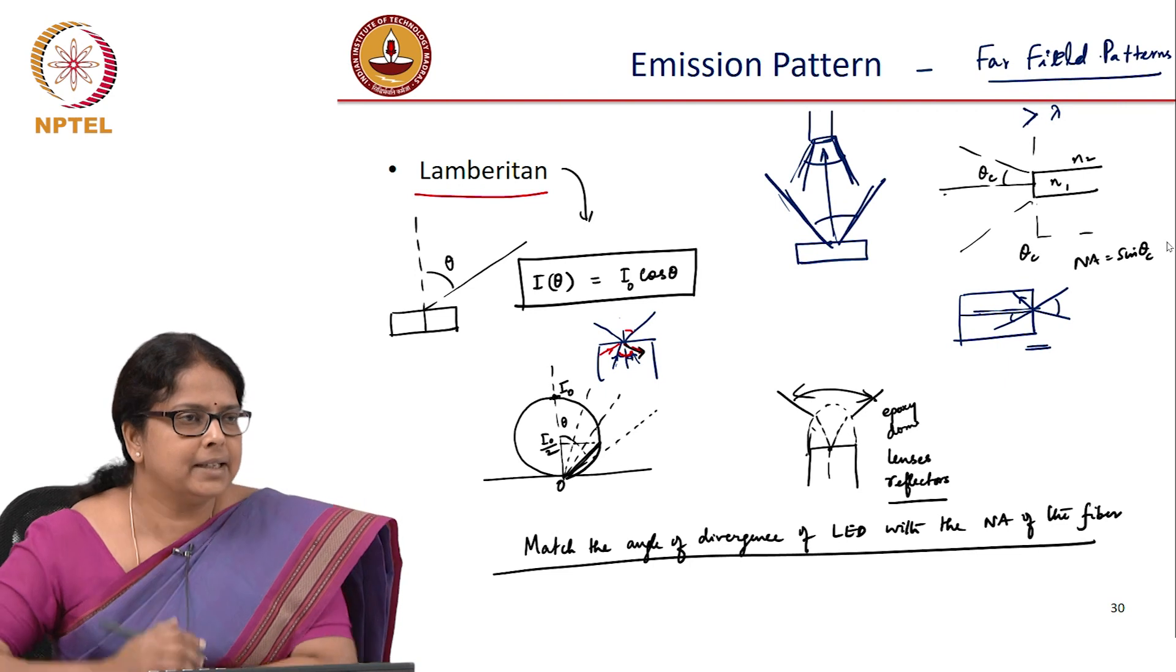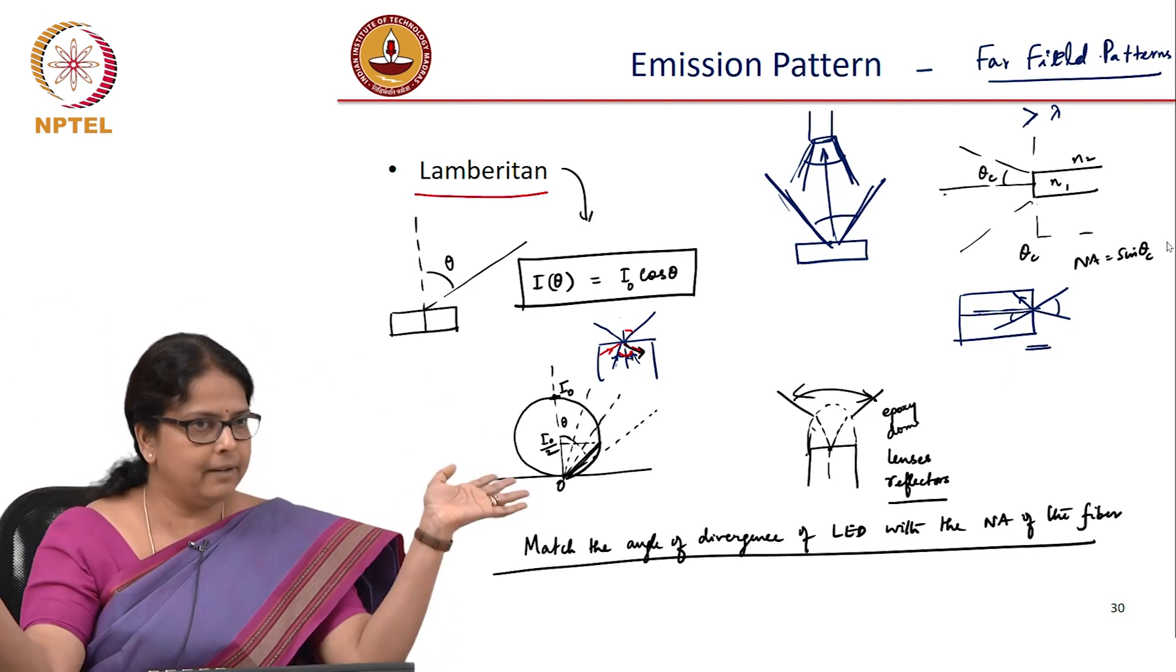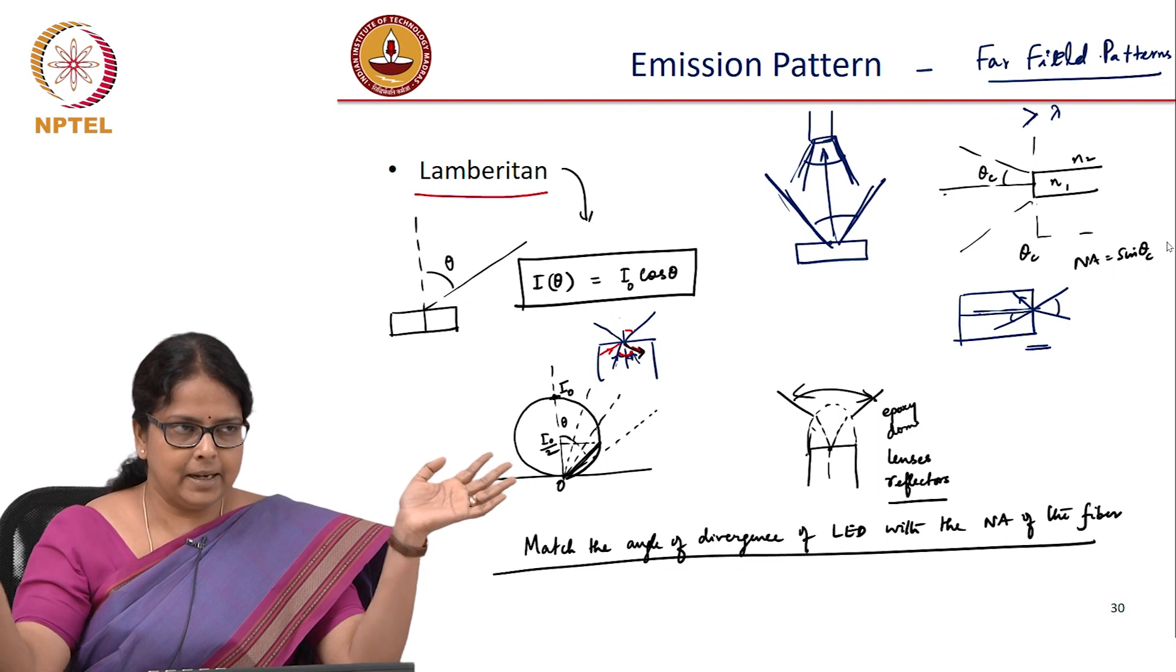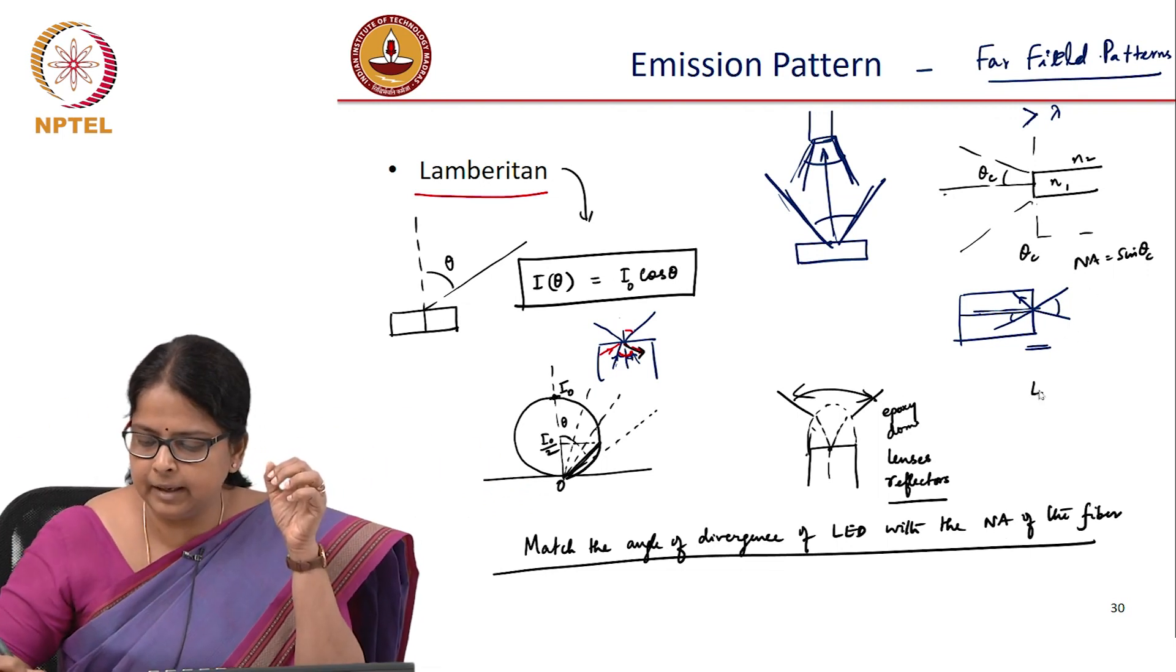Typically, display LEDs are surface emitting LEDs so that you can have a large acceptance angle, whereas communication LEDs are edge emitting LEDs.